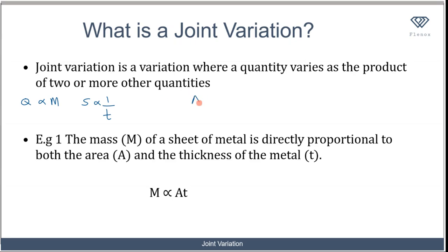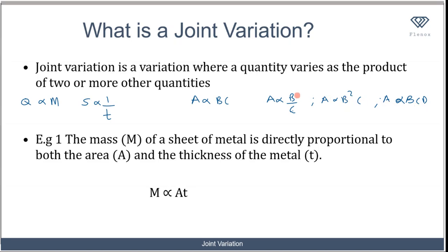For example, you have a being proportional to b and c, or a being proportional to b over c, or a being proportional to b squared times c. What it means is that a is proportional to more than one variable — two variables in each case. If you have a being proportional to b, c, and d, you have three variables, and you call that a joint variation.